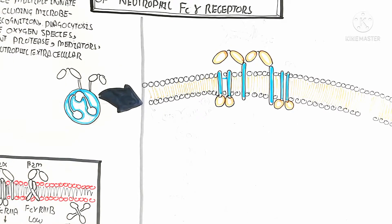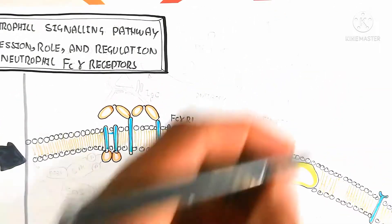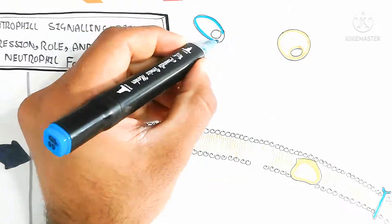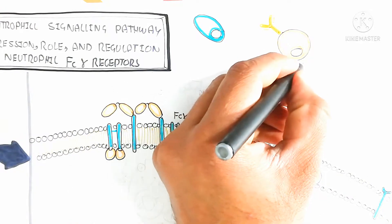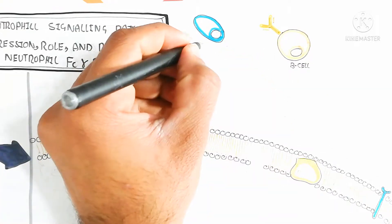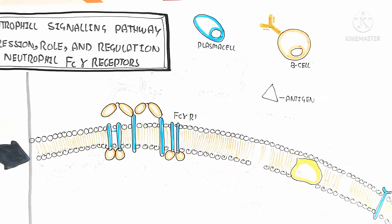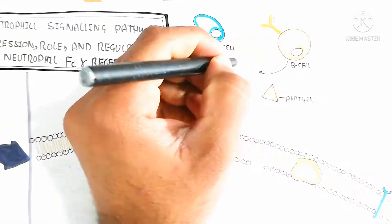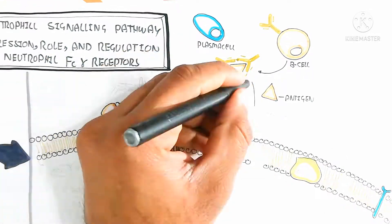Now let's understand the cellular signaling pathway in detail. FcγRI has high affinity. Here are the B memory cell and plasma cell, which after stimulation of the adaptive immune response will coat the antigen through antibodies — a process known as opsonization.